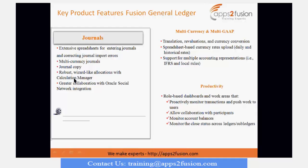You can do journal copies if you want to make a copy of a journal. There is also a robust allocation wizard using the Calculation Manager, which is a Hyperion-based tool. You can perform different types of allocations — rule-based, formula-based. I will touch base on allocations later in this slide.